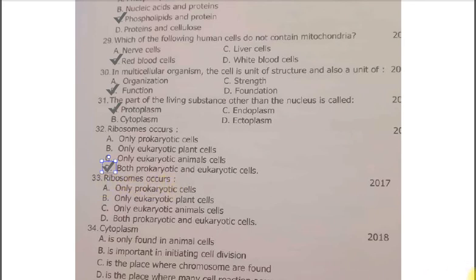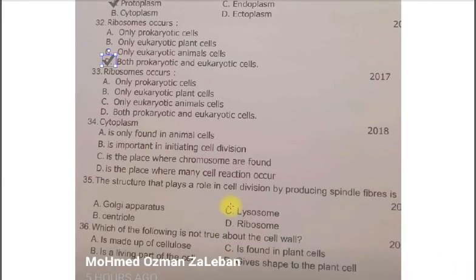Cytoplasm A. is only found in animal cells. B. Is important in initiating cell division. C. Is the place where chromosomes are found. D. Is the place where many cell reactions occur. So, the correct one is the option D. Is the place where many cell reactions occur.